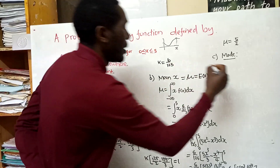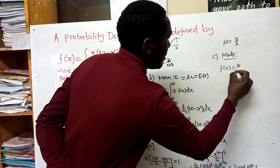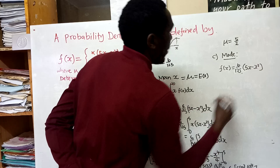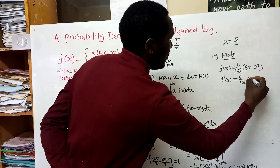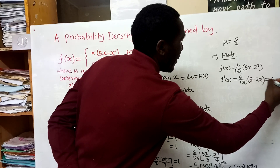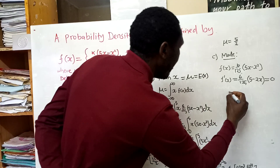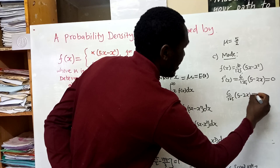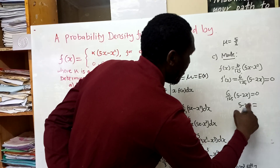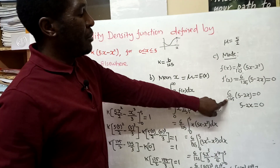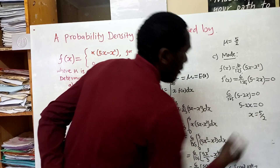We take f(x) = (6/125)(5x - x²) and differentiate it to get f'(x) = (6/125)(5 - 2x), then equate to 0. So (6/125)(5 - 2x) = 0. Multiplying both sides by the reciprocal of 6/125, we get 5 - 2x = 0, and when you work it out, the mode is 5/2.